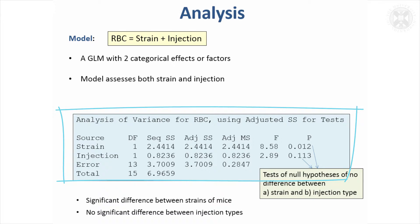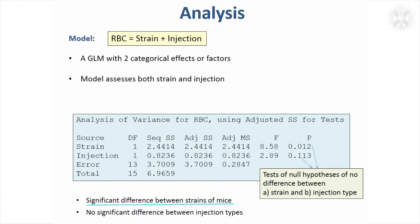This is the output from Minitab. Whereas we just had one row that we were interested in before, we've now got two rows — one that gives us a significance test to compare the strains, and a second one to give us a p-value to compare the different injections. We find there's a significant difference between the strains of mice in red blood cell count, but that might not be particularly interesting to us — we're studying the effect of the injection. That p-value says it wasn't significant, so we haven't been able to prove overall that there was an injection effect across both strains.